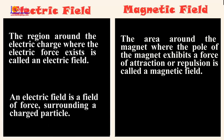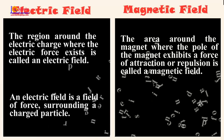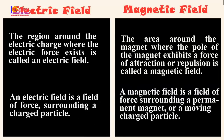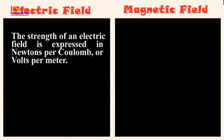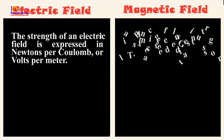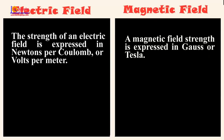An electric field is a field of force surrounding a charged particle, while a magnetic field is a field of force surrounding a permanent magnet or a moving charged particle. The strength of an electric field is expressed in newtons per coulomb or volts per meter, while a magnetic field is expressed in gauss or tesla.